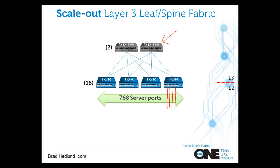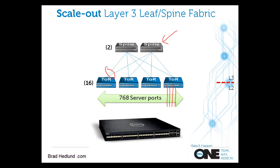Another fundamental design concept is that every leaf switch is connected to every spine switch — not half, not three-fourths, every spine switch. That builds a ubiquitous, all-points, equidistant fabric, which is what we want. Here I have my leaf switch, which happens to be an S4810 as a top-of-rack switch, and it has uplinks that go to the spine layer.